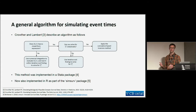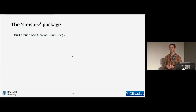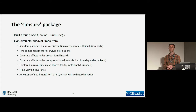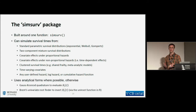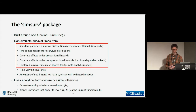This idea was implemented in a Stata package a couple of years ago and is now available in R as part of the SimSurv package, which is up on CRAN. It's built around one exported function, but with that function we can simulate event times under a whole range of survival models based on hazard specifications. Analytical forms are used wherever possible; otherwise we use Gauss-Kronrod quadrature and Brent's univariate root finder — the uniroot function in R.